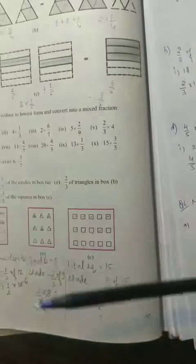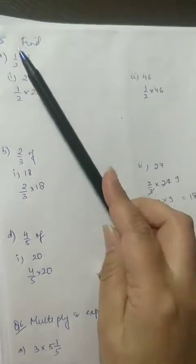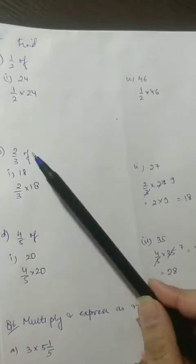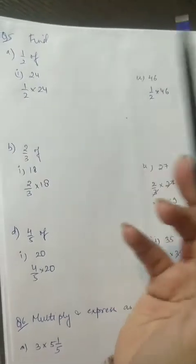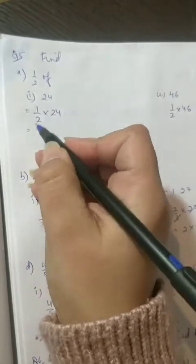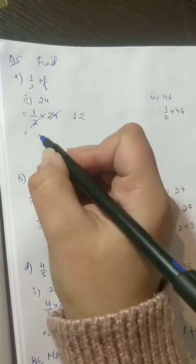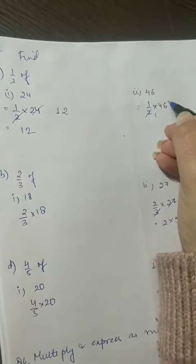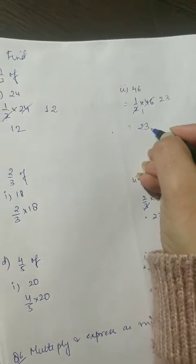Now this one is even simpler — हमें सिर्फ find out करना है, जैसे इसमें हमने circle shade किया था. सिर्फ find out करना है: half of 24, या 1 by 2 of 24, या 1 by 2 of 46, 2 third of 18, 2 third of 27. कैसे करेंगे? We will multiply the fraction with the number. ठीक है, अब यहाँ पे 1 by 2 of 24 — cancel out common factors — 2 ones are 2 and 2 twos are 4. Answer is 12. यहाँ पे 46 है: 2 ones are 2, 2 twos are 4 and 2 threes are 6. Answer comes as 23.